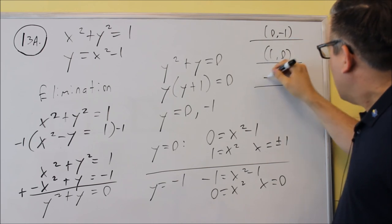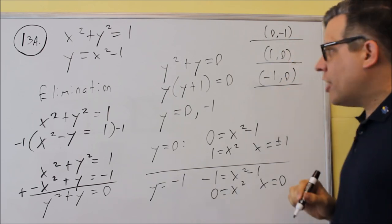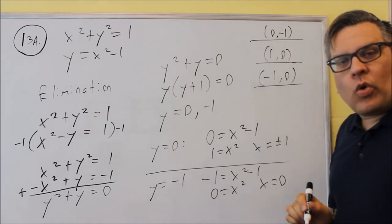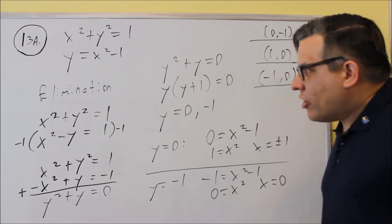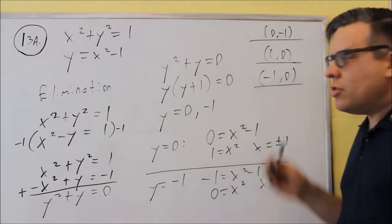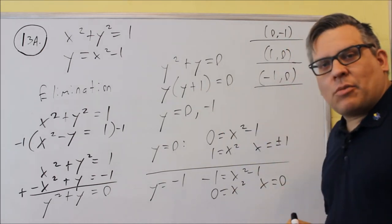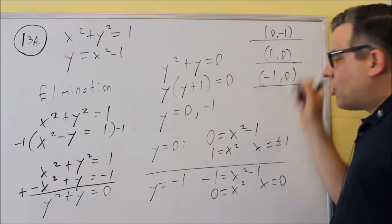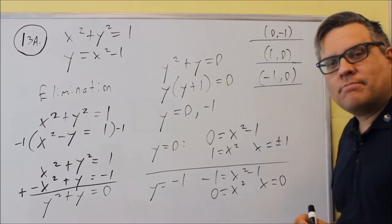Writing the answers as ordered pairs with x values first: (0, −1), (1, 0), and (−1, 0). No matter how you solve it — by substitution or elimination — you should end up with exactly the same answers: three points of intersection for this problem.